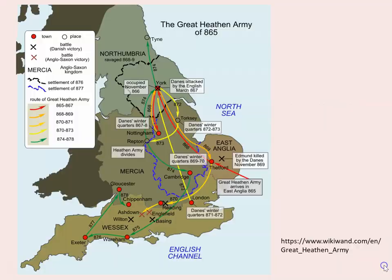This Danish Viking army, called the Great Heathen Army, was composed mostly of Danish Vikings, but also contained other elements from Norway, Sweden, and even further afield. It lands in East Anglia in 865, and after picking up some horses from King Edmund, which allowed it to travel on out of his kingdom as he hoped, they then moved north and eventually took York in 866-867.